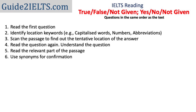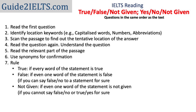And finally, use synonyms for confirmation — try to find synonyms in the text for as many words in the question as possible to confirm your answer. Follow a straightforward rule: if every word in the statement is true, your answer is true or yes. If even one word is false, your answer is false or no. If any part of the statement is not mentioned in the text, your answer is not given.